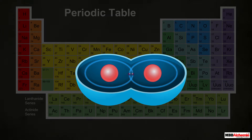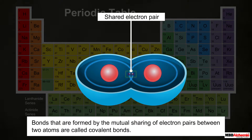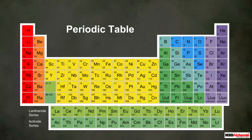To achieve noble gas configuration, atoms come together and form bonds with each other. Many atoms form a bond by sharing electron pairs with each other. Such bonds, formed by the mutual sharing of electron pairs between two atoms, are called covalent bonds.